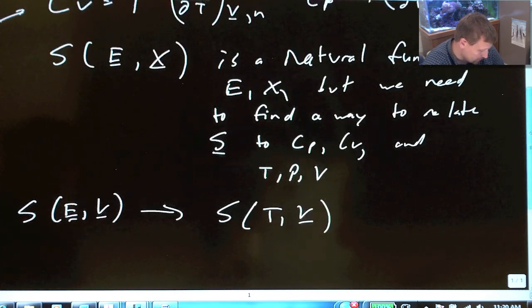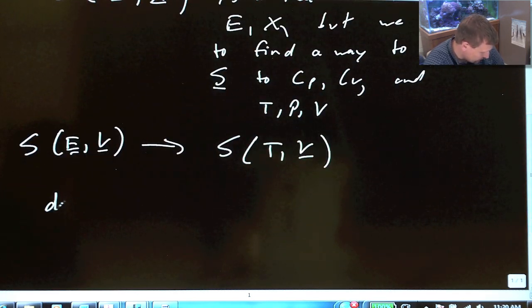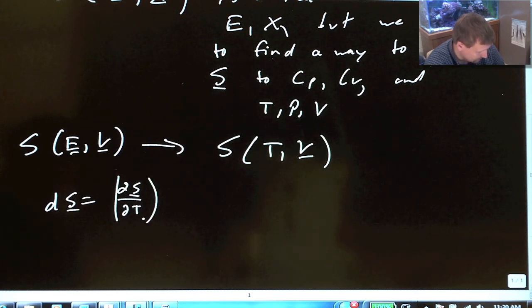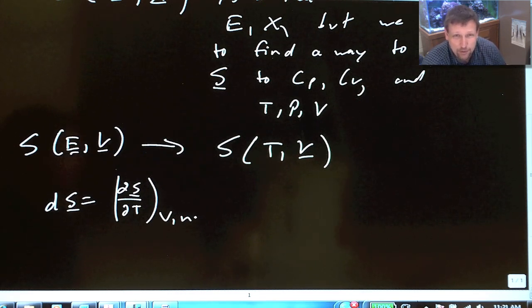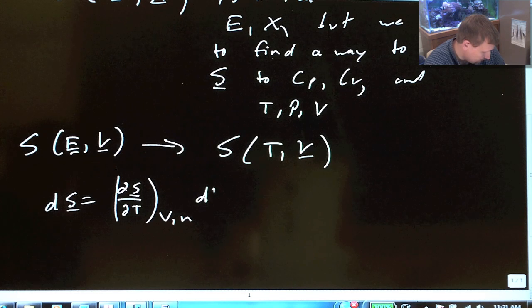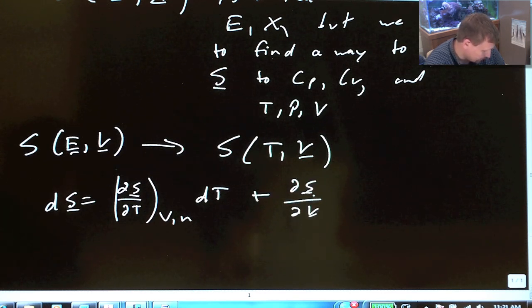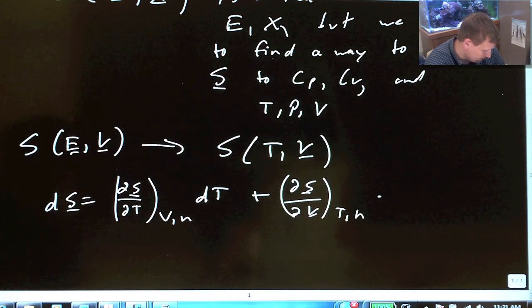In order to do the following, we could have dS equals del S del T at constant V, common number of N, just by taking the differential of this, times dT. I'm sorry, this first one will be dT plus del S del V at constant T, comma N, dV.